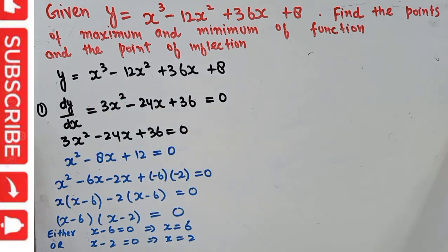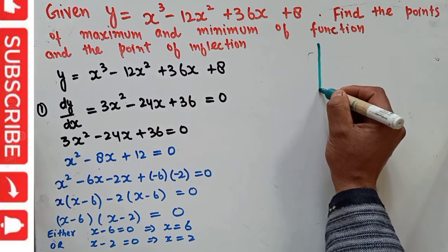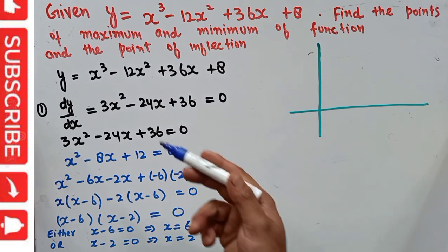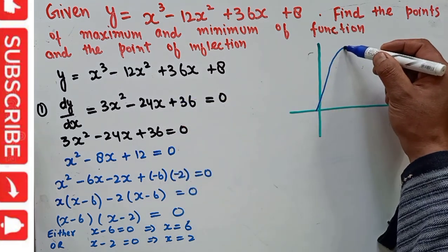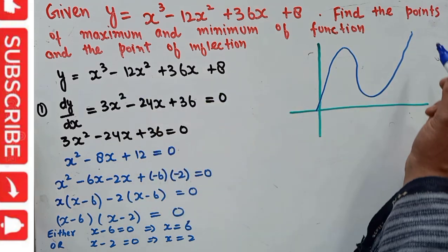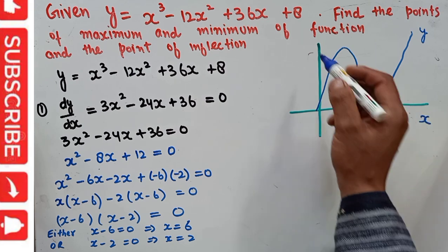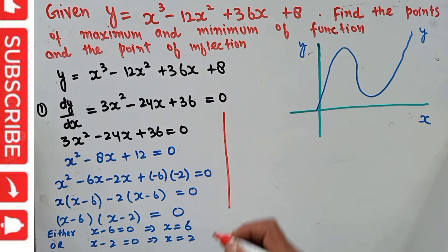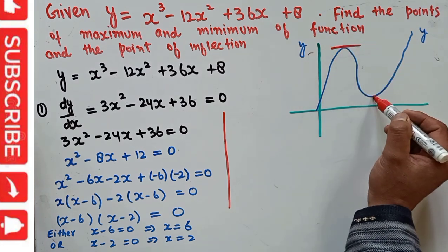Let me draw a simple graph here to make more sense. We have the x-axis and y-axis, and a curve representing this function. At x = 6 and x = 2, the slope of the function is equal to zero. Now, to find out which of these two points is a maximum and which is a minimum, we need to check the second derivative. The first derivative test only identifies where the slope equals zero.